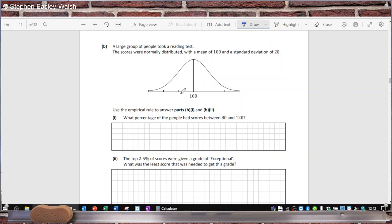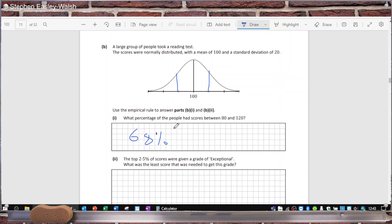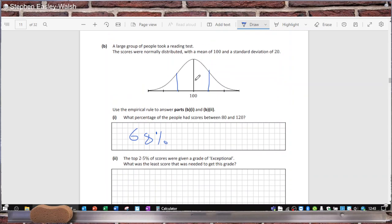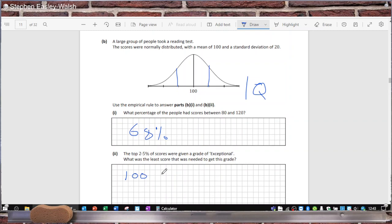Between 80 and 120 is one standard deviation. The empirical rule says that's 68%. And this is the mistake I made. I was thinking that the test was measured out of 100, but it's more like an IQ test where the average is 100. So the top would be 100 plus 1.96 standard deviations.